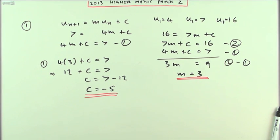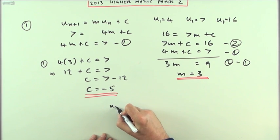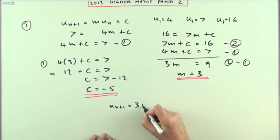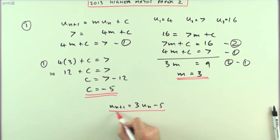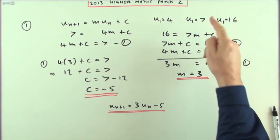It just said find the values of m and c, so that would do. I don't need to write this out again. Un+1 equals 3un minus 5. But I just did, so I will.